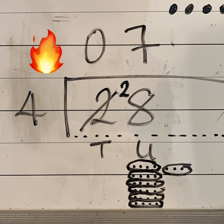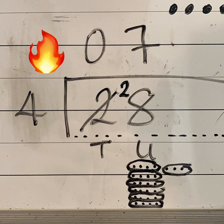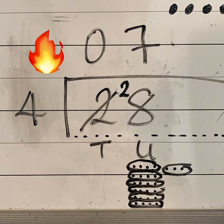Now this next part is super duper cool. You can use your 4 outside of your bus stop and your answer of 7 to check your answer. 7 times by 4 equals 28.